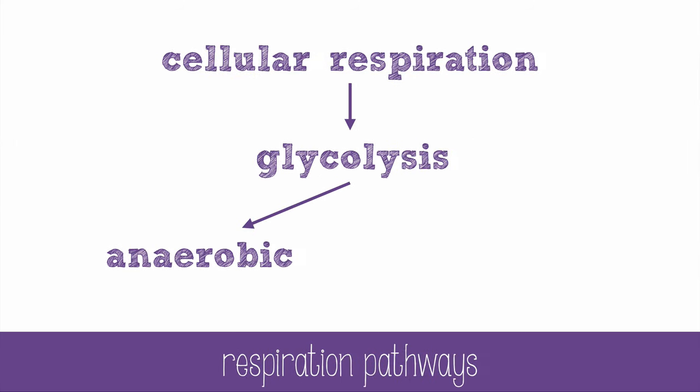Anaerobic respiration is not actually very good at making ATP — it relies on just the 2 ATP that can be made from glycolysis. But if oxygen is present, aerobic respiration will occur, and it's an ATP-producing machine.